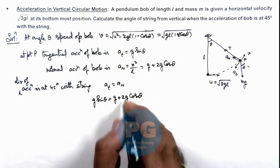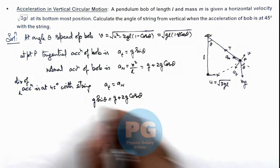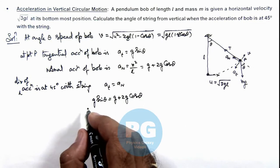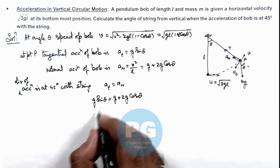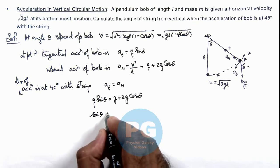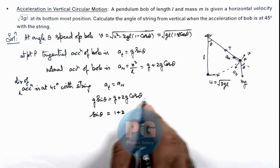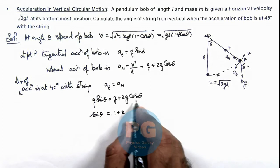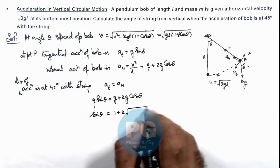g gets cancelled out and further simplifying we can see this can be given as sin θ = 1 + 2cos θ. Further we can open up in form of sin θ = √(1 - sin²θ).